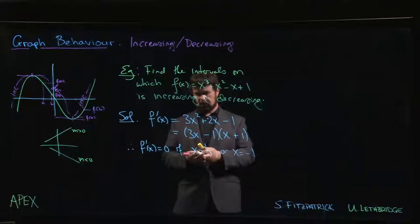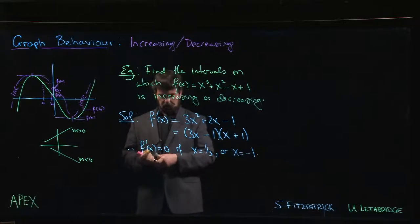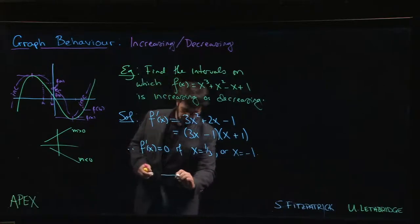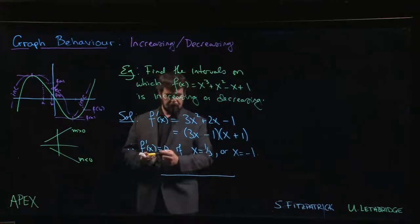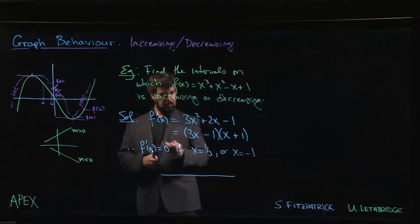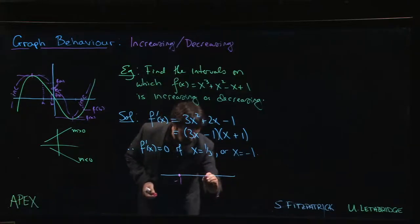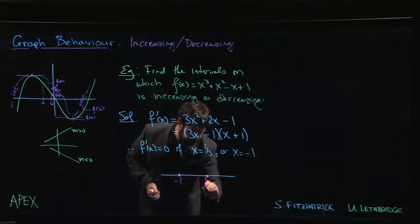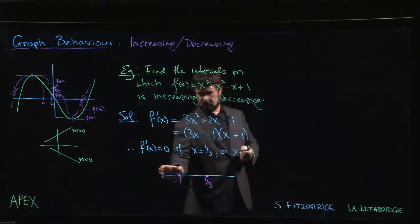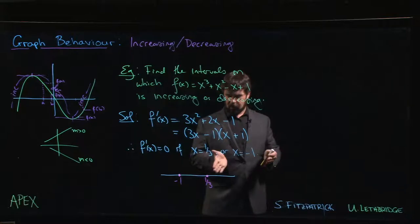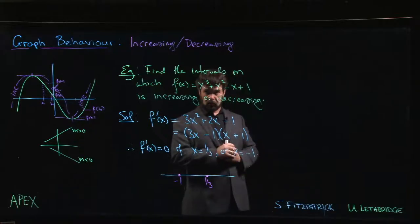We have our two zeros, so we have the only two places where the function can possibly change sign. What we do is we give ourselves a little number line. People will refer to these as sign diagrams or sign charts. We mark off our zeros, so there are two places where the derivative is zero, at -1 and at 1/3. We know that in these three intervals that result once we mark those off, the function has to have a constant sign on each of these intervals because we know the zeros are the only places where you can have a sign change.